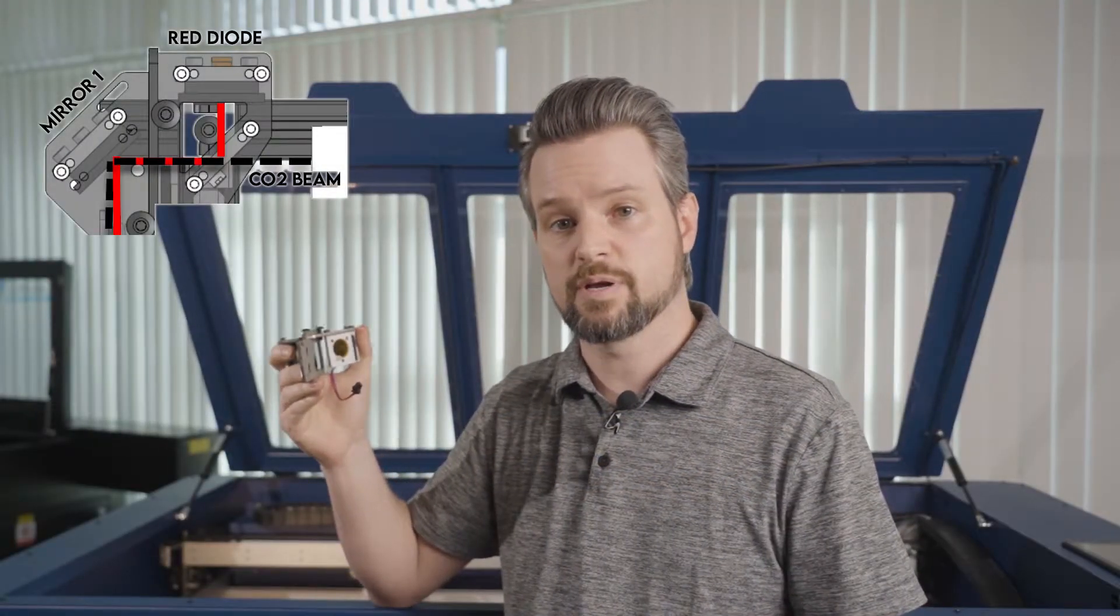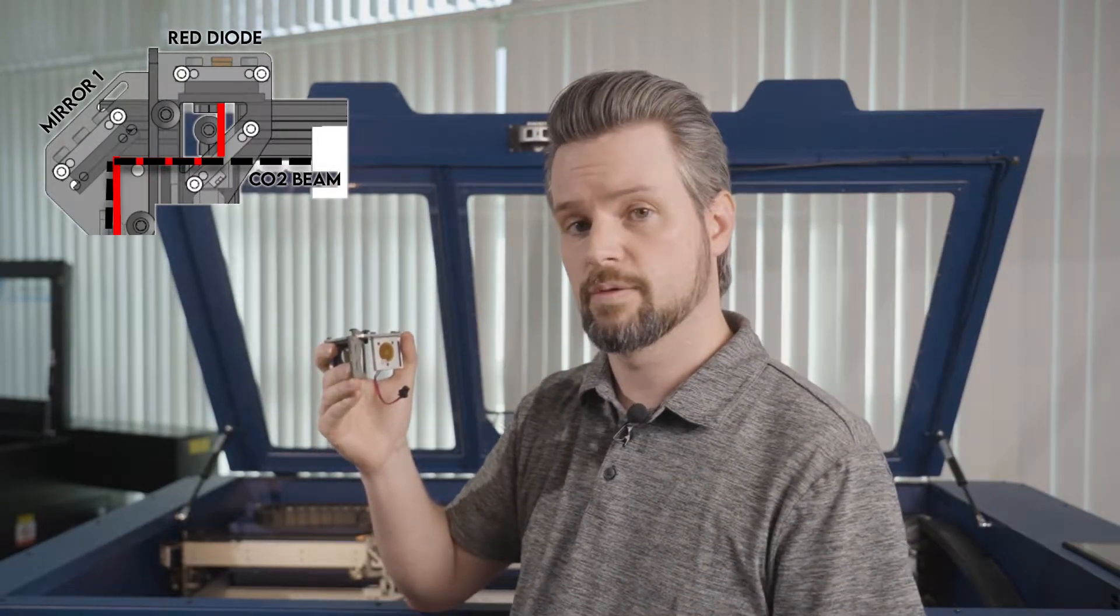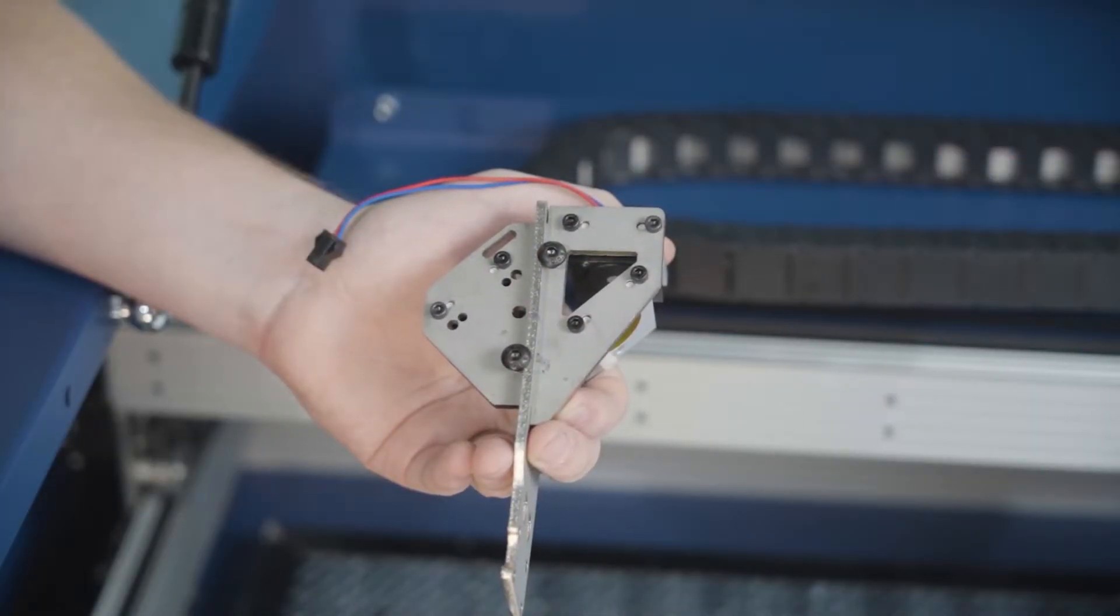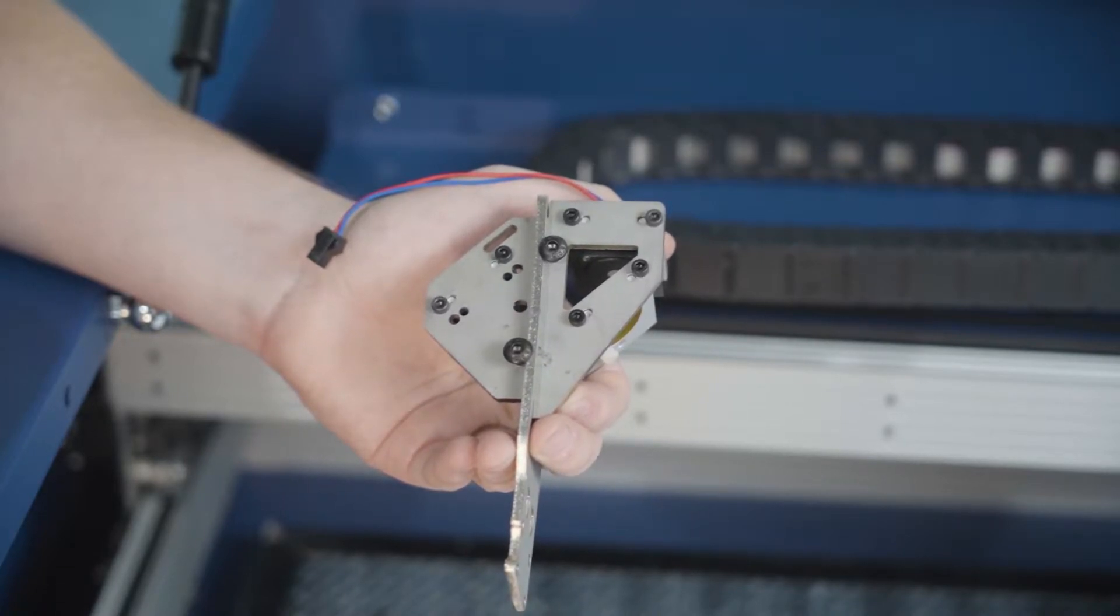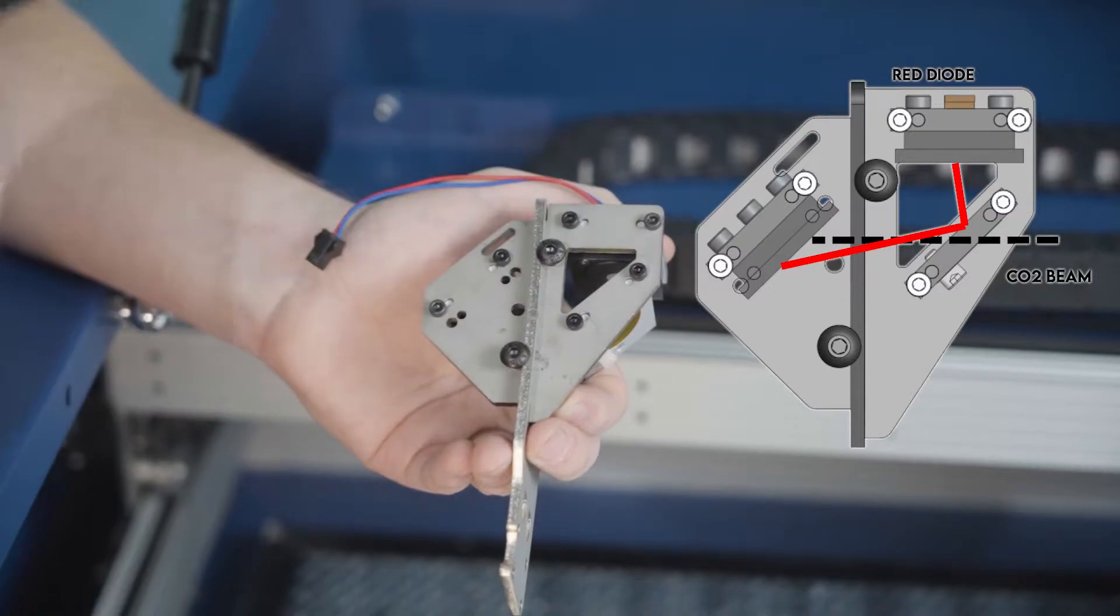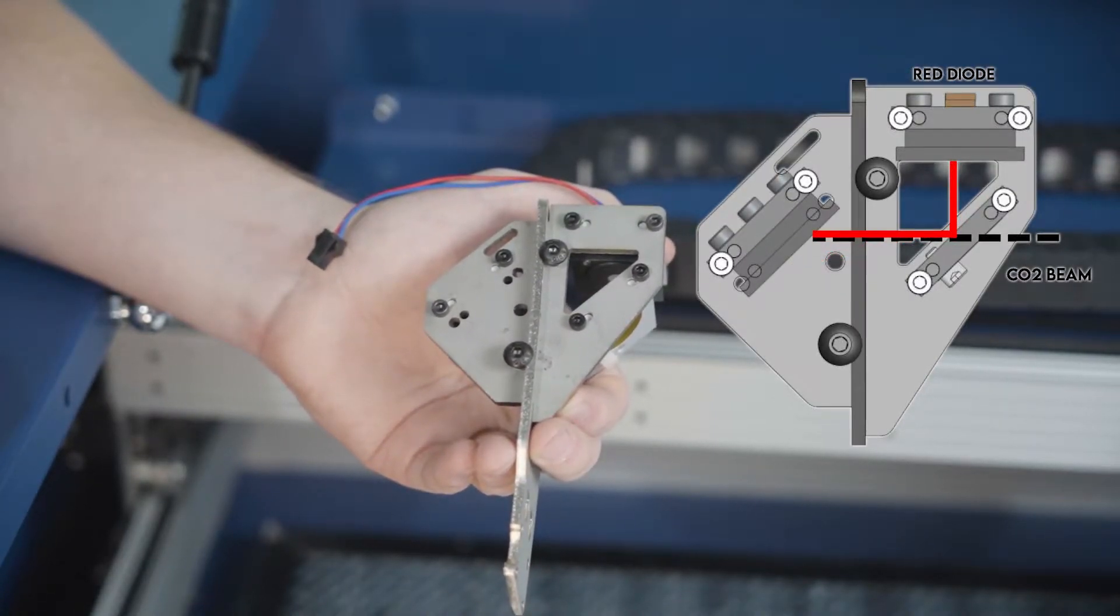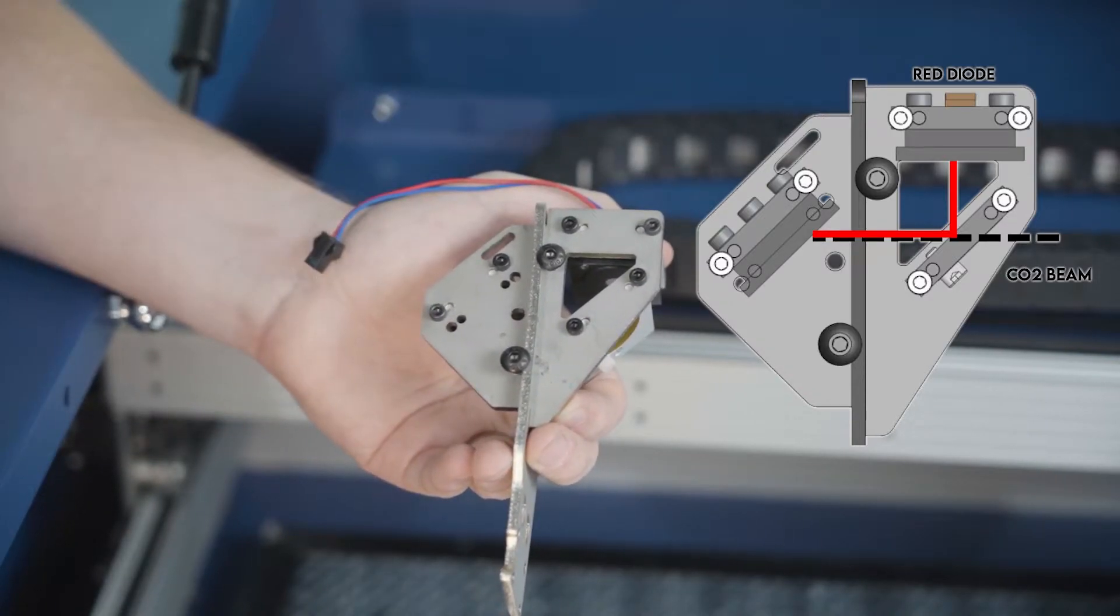This is the assembly that houses your beam combiner, your red diode, and mirror one. This is located on the back side of your gantry on the left side, all the way in the back left corner. There are two lasers in the Muse Titan. The CO2 laser is invisible to the human eye, so the red laser is there to visualize the path of the CO2 laser. In this step, we are going to align the red laser with the CO2 laser.